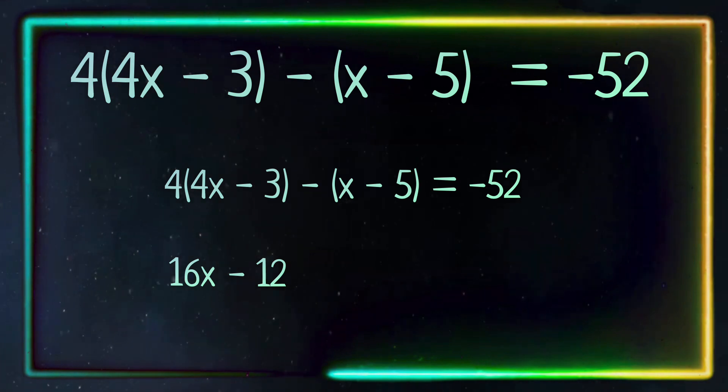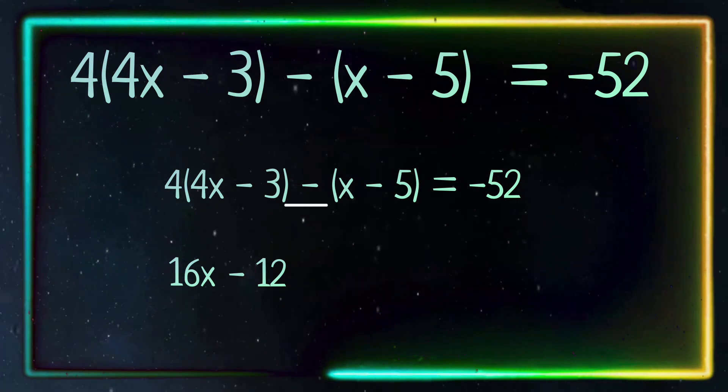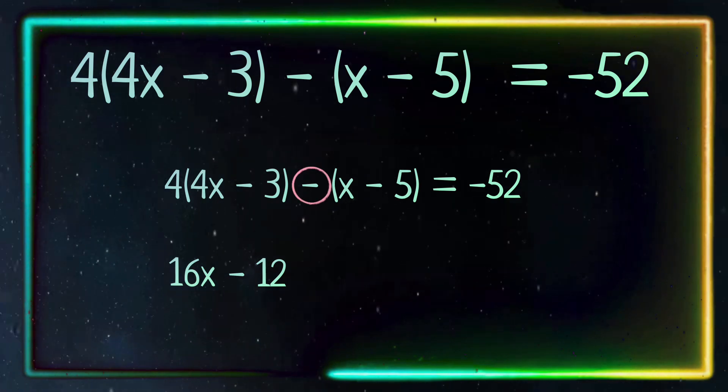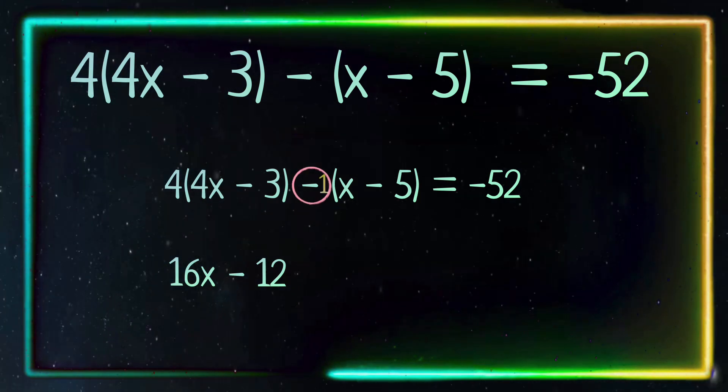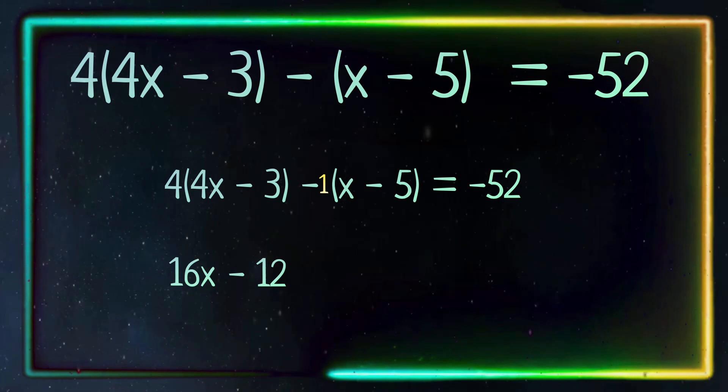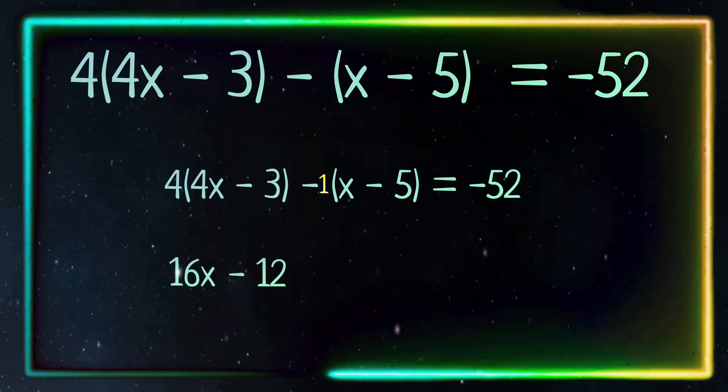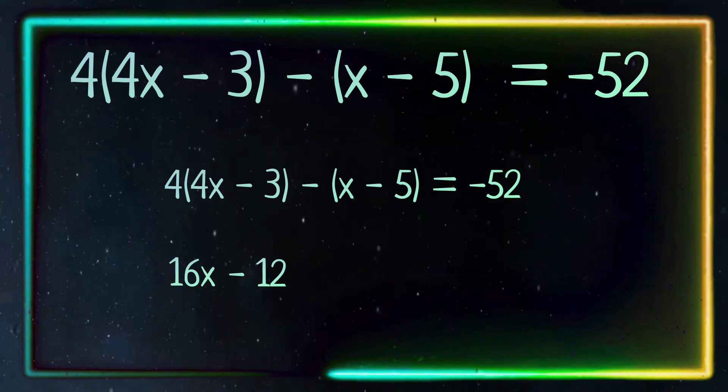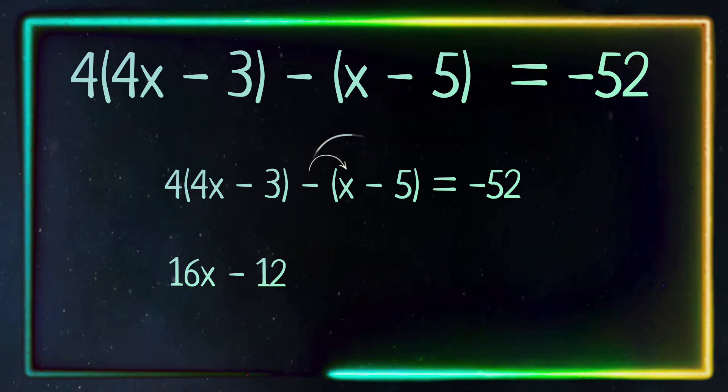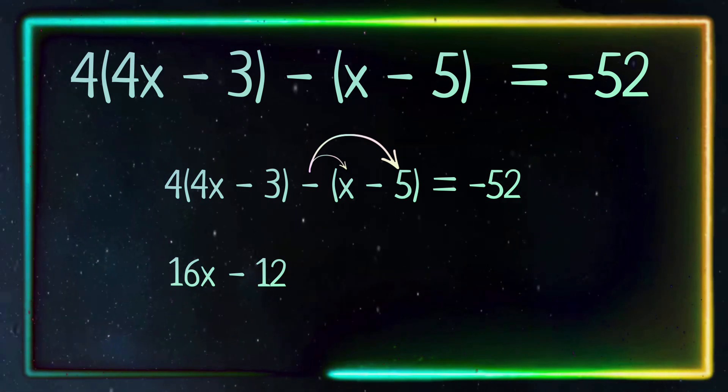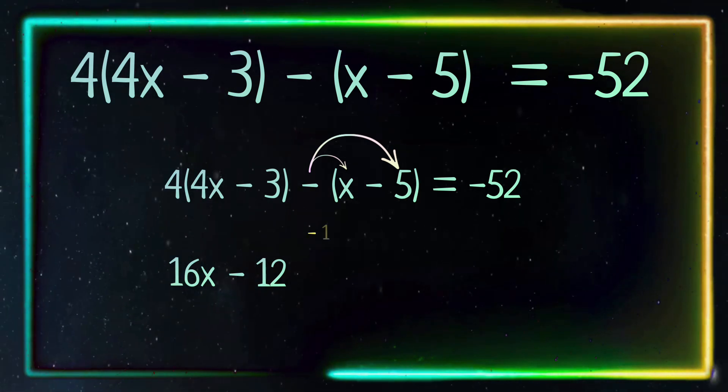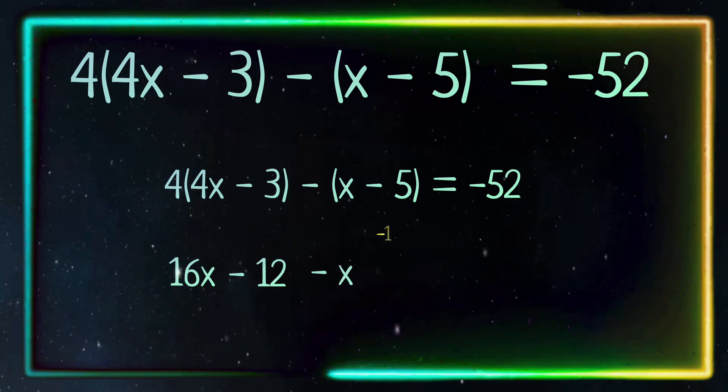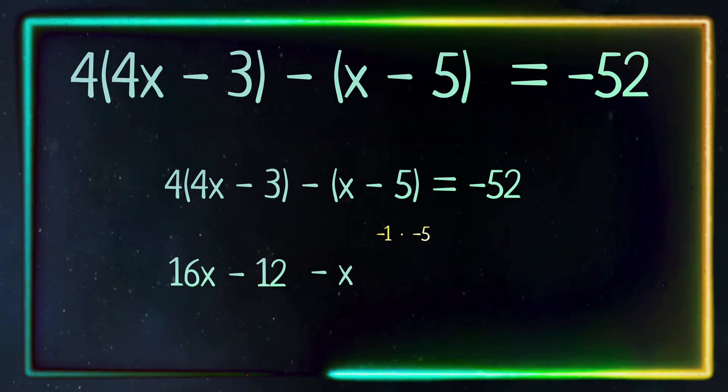And now let's distribute this over here. When there is just a negative on the outside of a parenthesis, I like to put a 1 after it just for visual purposes to make sure that I don't forget to distribute the negative sign. So we will distribute the negative and the x and then the negative sign and the negative 5. Negative 1 times x equals negative x. Negative 1 times negative 5 equals 5.